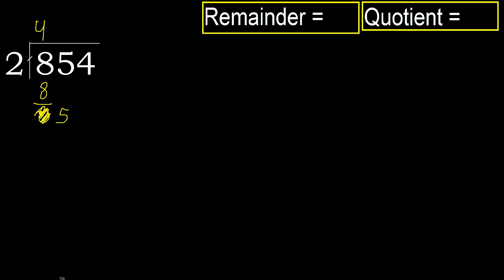2 multiplied by 3 is 6, which is greater. Multiplied by 2 is 4, which is not greater. Subtract. Next: 14.